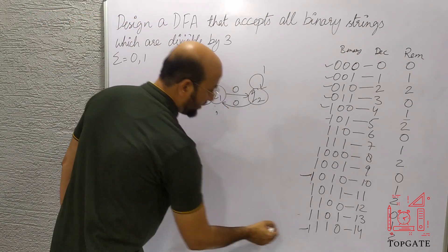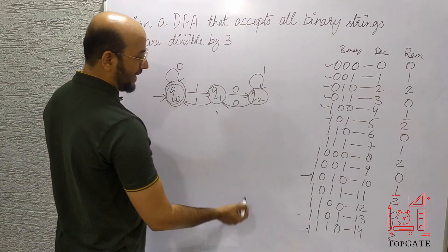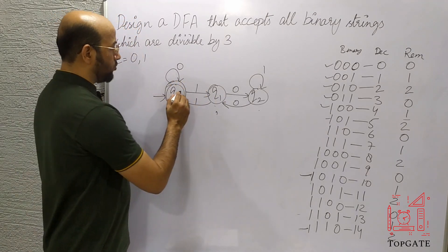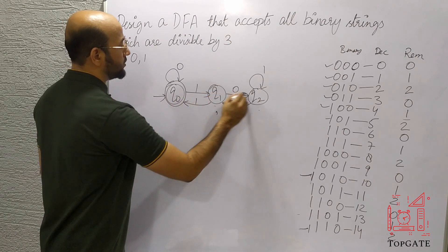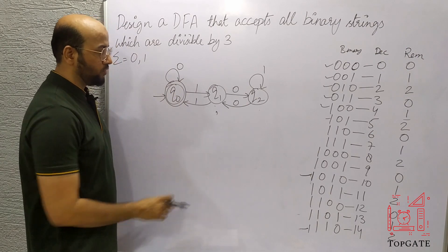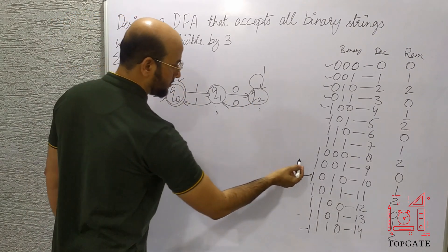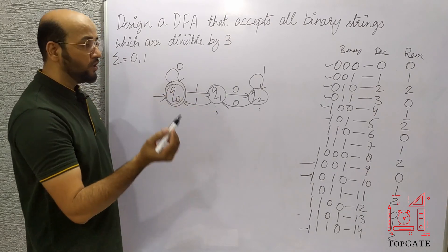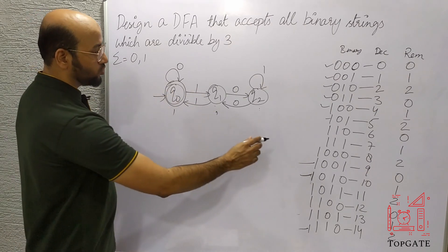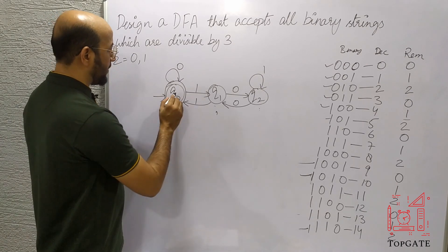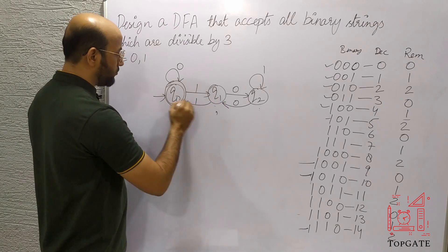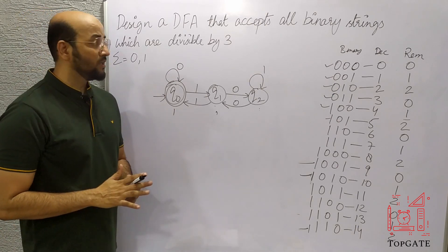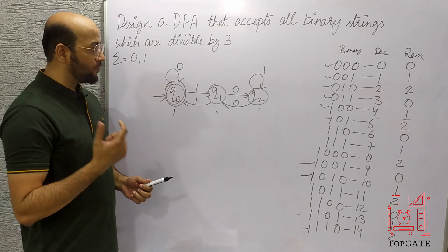Let's take another example: 1110 in binary is 14 in decimal, and 14 divided by 3 gives remainder 2, so we should come to state q2. Tracing 1, 1, 1, 0 — we arrive at state q2. Correct. Finally, 1001 in binary is 9 in decimal, and 9 divided by 3 gives remainder 0, so we should come to state q0. Tracing 1, 0, 0, 1 — we arrive at state q0. Therefore this is the DFA that accepts only those strings which when divided by 3 give remainder 0.